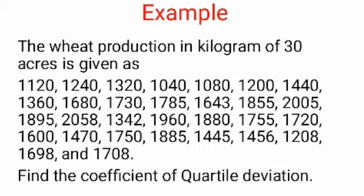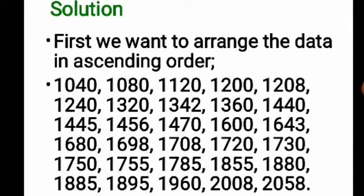So we want to discuss how to calculate quartile deviation from ungrouped data. First of all, we want to arrange the data in ascending order. After arranging the data, we want to find out Q1 and Q3. The data are ordered in ascending order, smallest first and largest last.